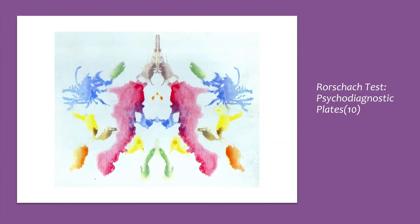Card 10 is structurally similar to card 8, but its uncertainty and complexity are reminiscent of card 9. People who find it difficult to deal with many concurrent stimuli may not particularly like this otherwise pleasant card. Being the last card, it may provide an opportunity for the subject to sign out by indicating what they feel their situation is like or what they desire to know. Many people love this card, probably because it is so vibrant. Popular responses include lobsters, spiders, rabbit heads, and caterpillars.